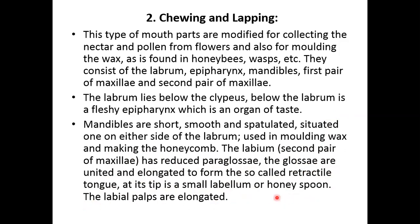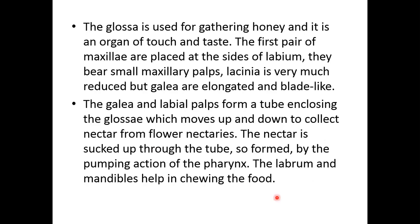The honey spoon and the labial palps are elongated. The glossa is used for gathering honey and is an organ of touch and taste. The first pair of maxillae are placed on either side of the labrum. The maxillary stipes are very much reduced but the galea are elongated and plate-like. The galea and labial palps form a tube enclosing the glossa, which moves up and down to collect nectar from flowers. Nectar is sucked up through this tube by the pumping action of the pharynx, while the labrum and mandibles help in handling the food.